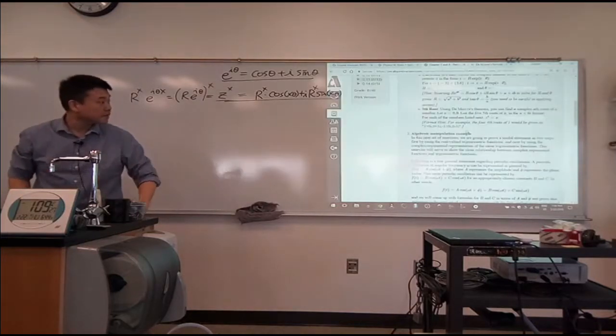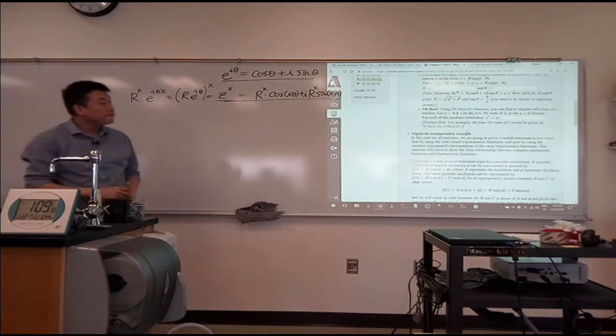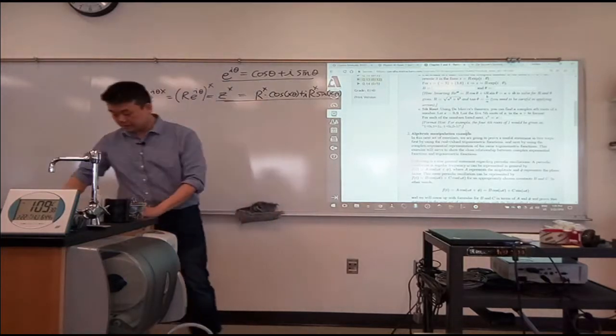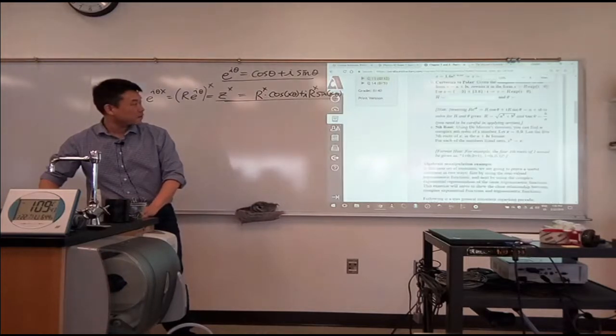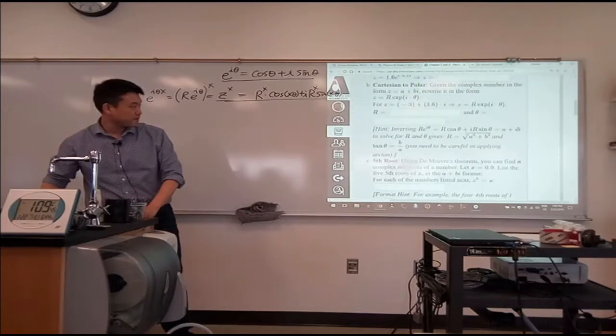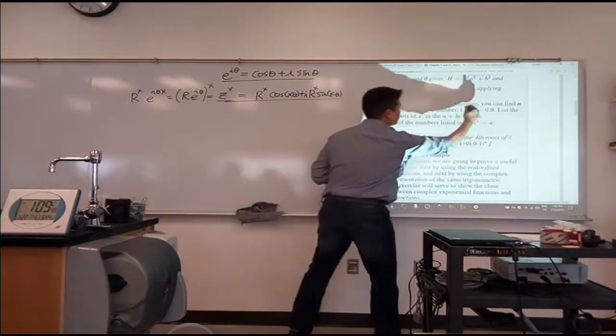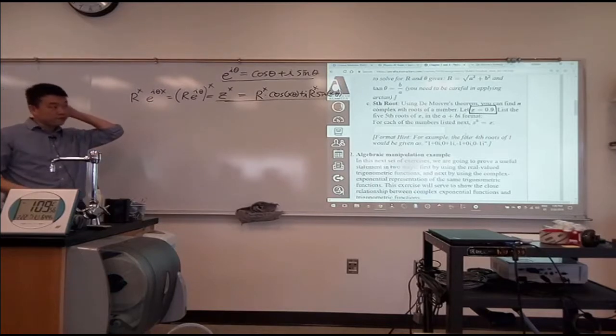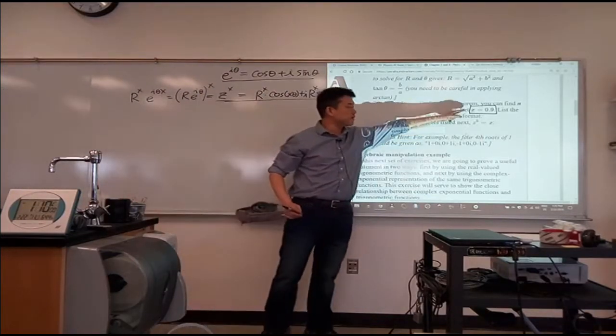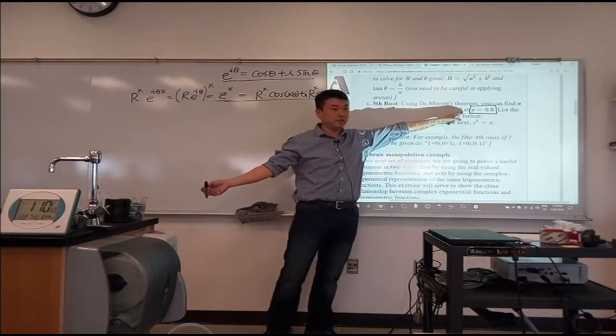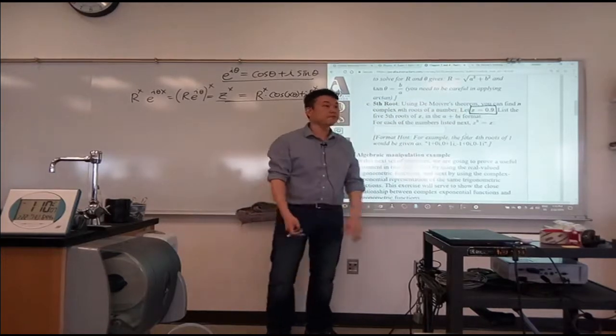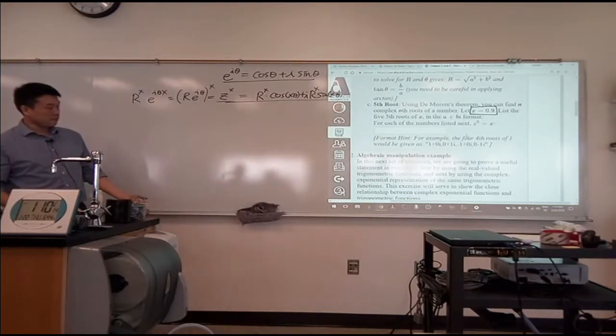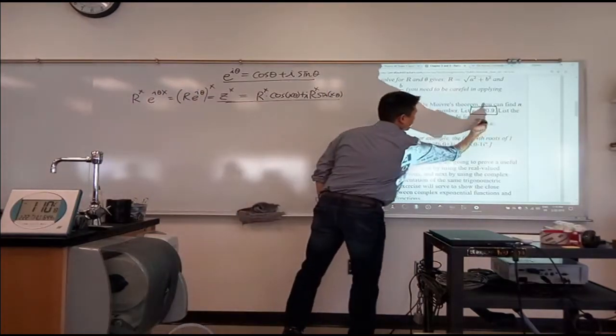That's what the question is asking you to use. The exact number will depend on how the question is generated for you. For the version generated here, it says let x equal 0.9. It's looking for the fifth root of x. The number you'll get will always be a positive real number. I could have given you a complex number, but I think that makes things too complicated.